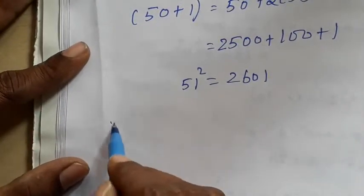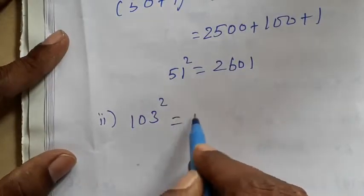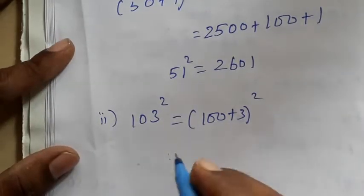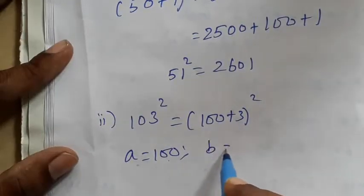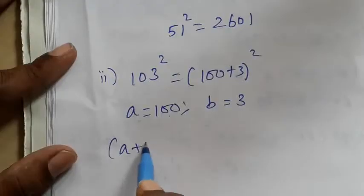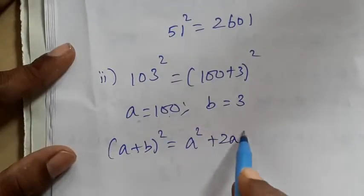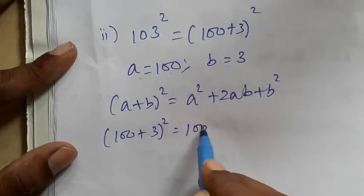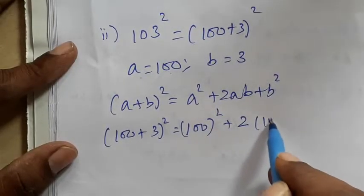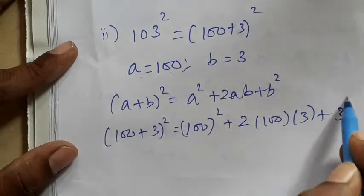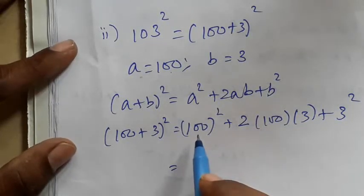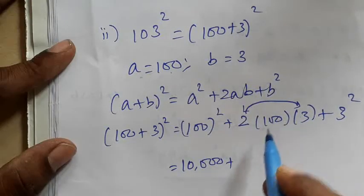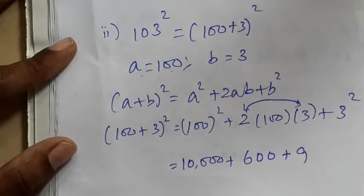Chapter 2. A plus B the whole square formula: A plus B squared is equal to A squared plus 2AB plus B squared. Let's discuss what this means. 1 plus 1 plus 2 more squared. 1 plus 2 more squared. 2 plus 3 squared.